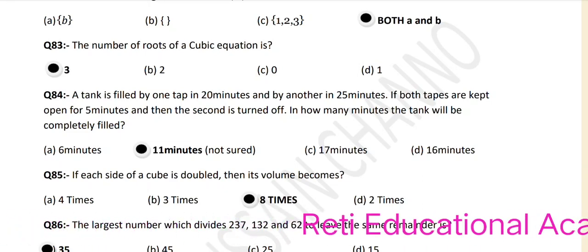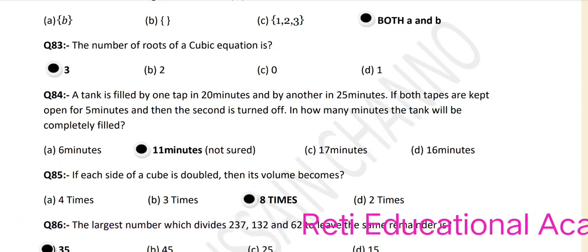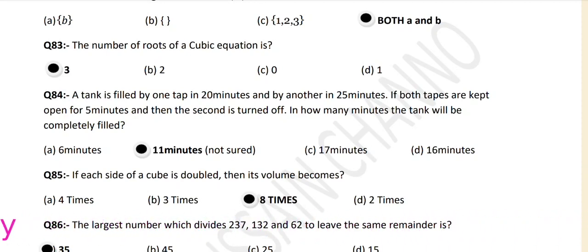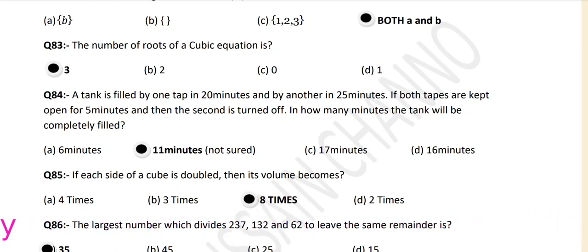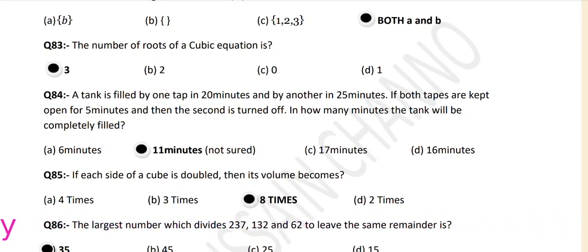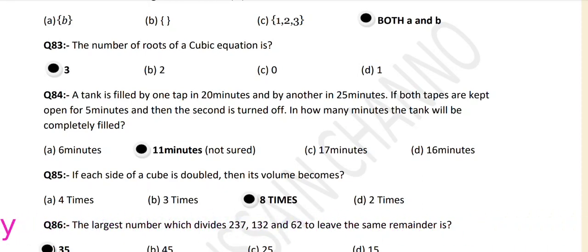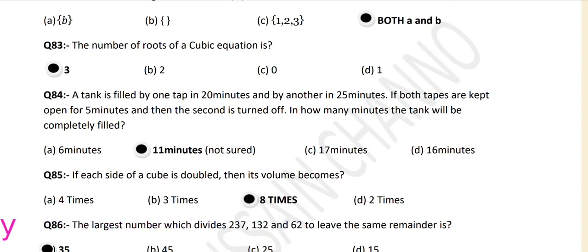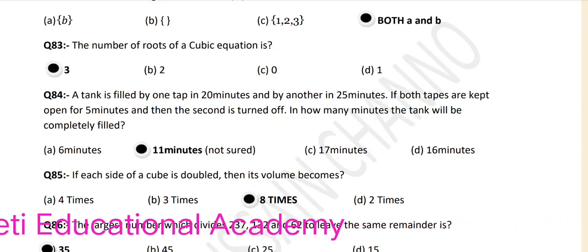Question number 84: A tank is filled by one tap in 20 minutes and by another in 25 minutes. If both taps are kept open for 5 minutes and then the second is turned off, in how many minutes will the tank be completely filled? The answer is 11 minutes. If you want a solution to these problems, just comment and we will try to upload soon.